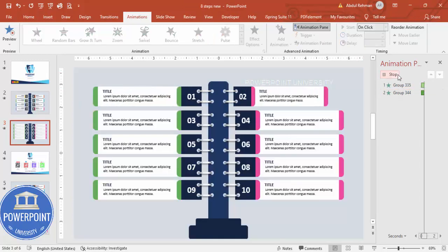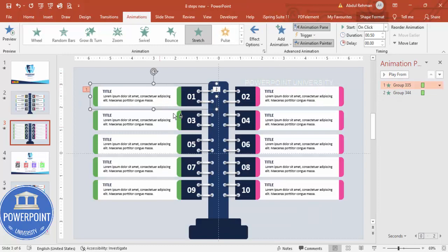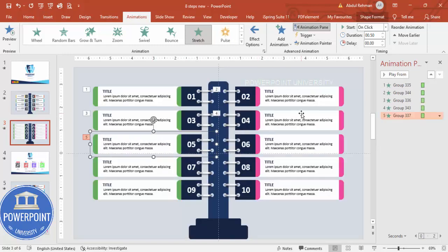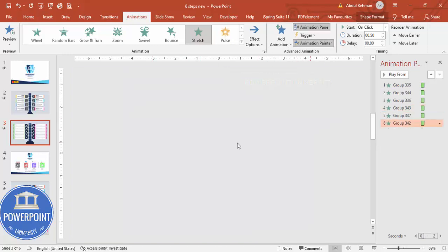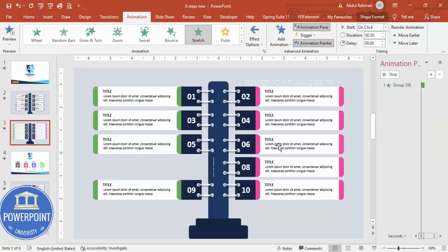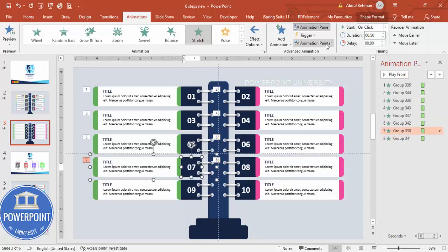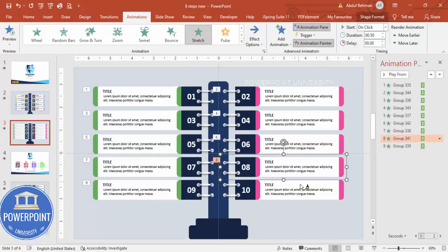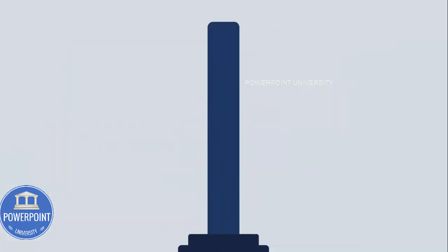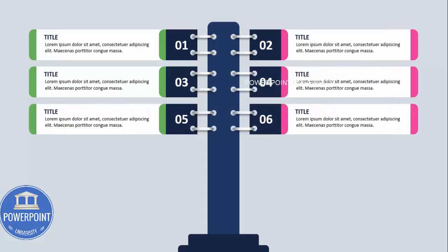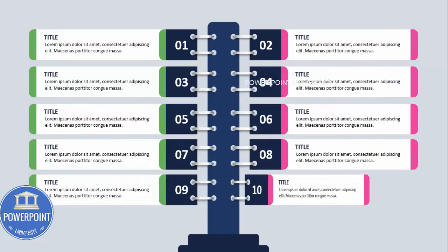Select each remaining group one by one and use Animation Painter to apply the same effect quickly across all ten options. Once all animations are applied, play the slide — you can see options one through ten appearing in sequence: one, two, three, four, five, six, seven, eight, nine, and ten.